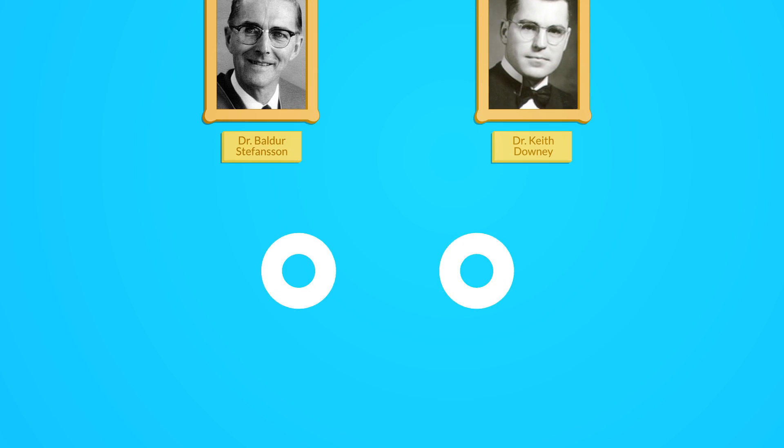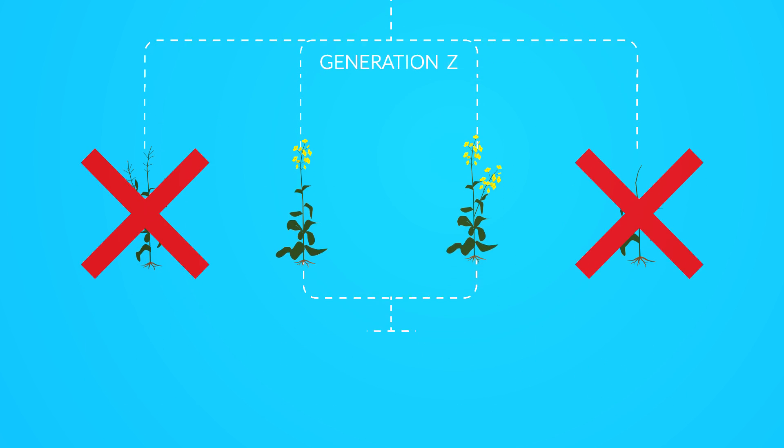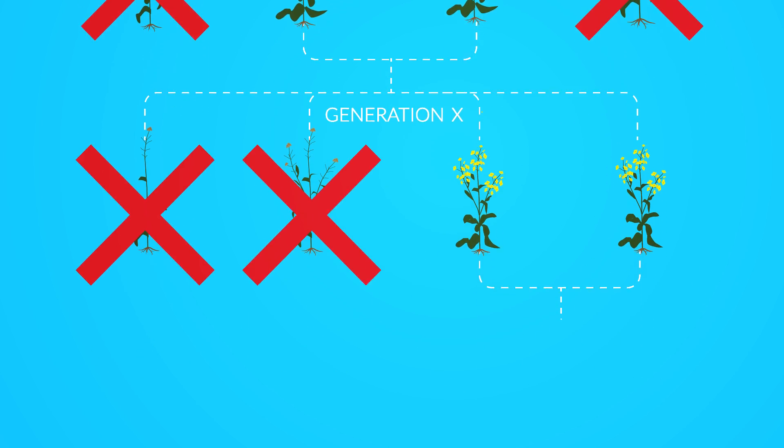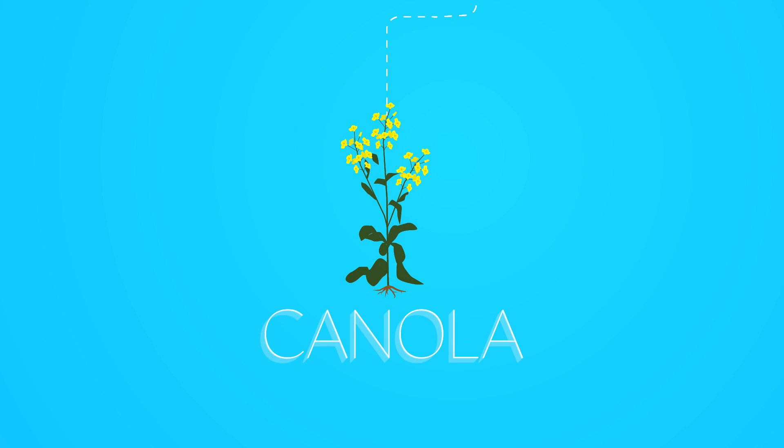Dr. Baldur Stephenson and Dr. Keith Downey used traditional plant breeding methods to reduce erucic acid and glucosinolates found in rapeseed, compounds that lack nutritional properties, leaving them with a new crop they called canola.